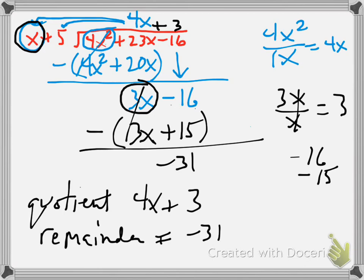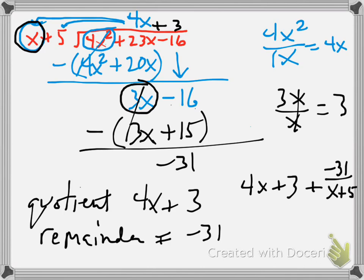Sometimes the way they write this — if you were to write this out, you would write your answer as 4x plus 3 plus negative 31 over x plus 5. In other words, the remainder over the divisor. So that would be your answer. I'll check on whether they're going to require that format.